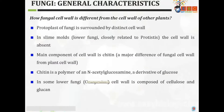The fungal cell wall is different from the cell wall of other plants. The protoplast of fungi is surrounded by a distinct cell wall. In slime molds, which are a lower form of fungi closely related to Protista, the cell wall is absent — this is a rare example. The main component of the fungal cell wall is chitin.